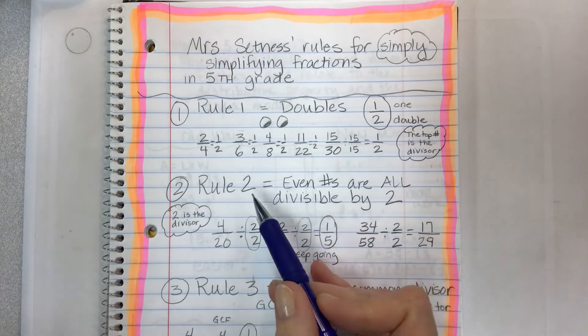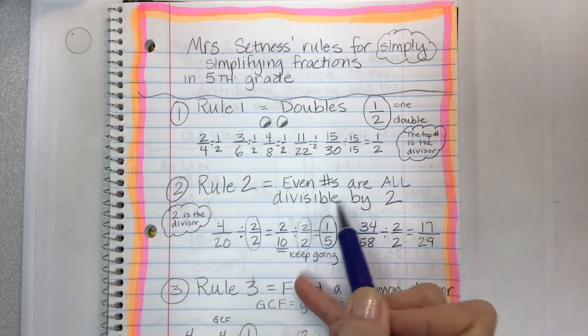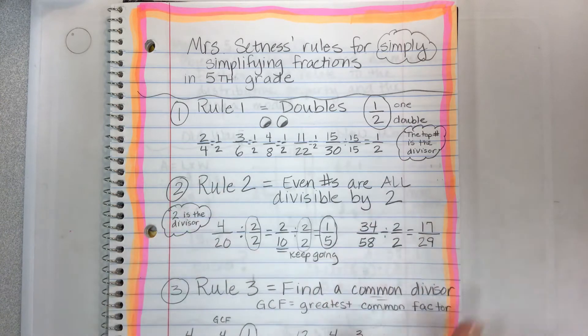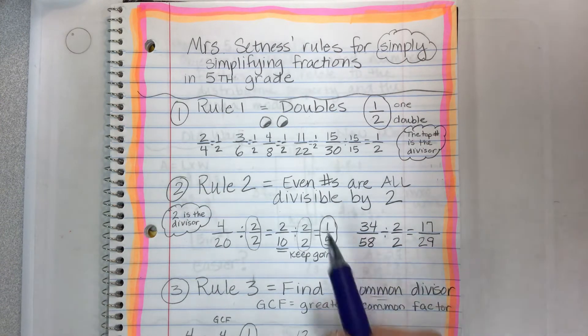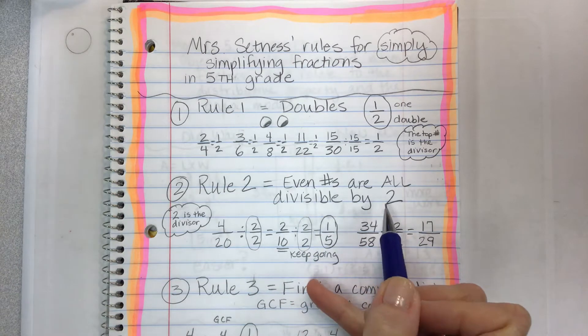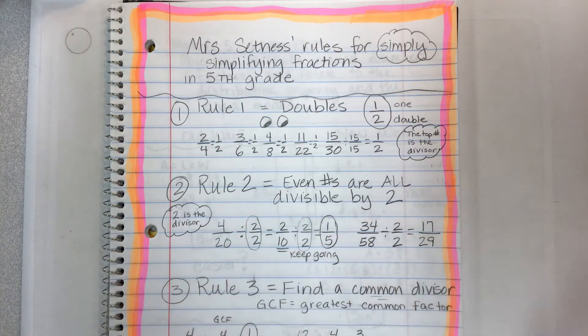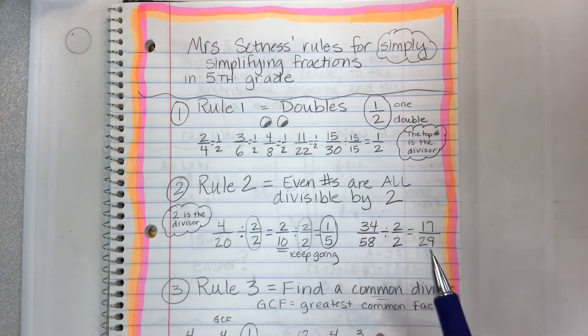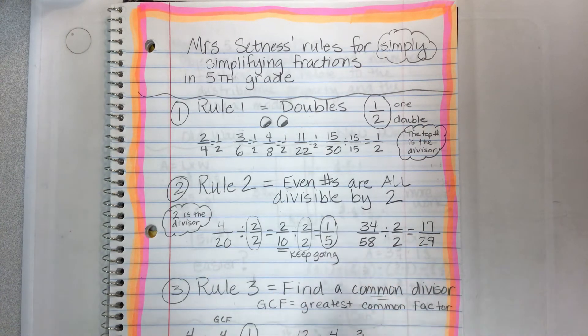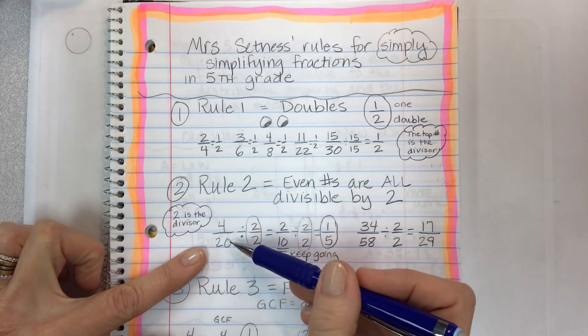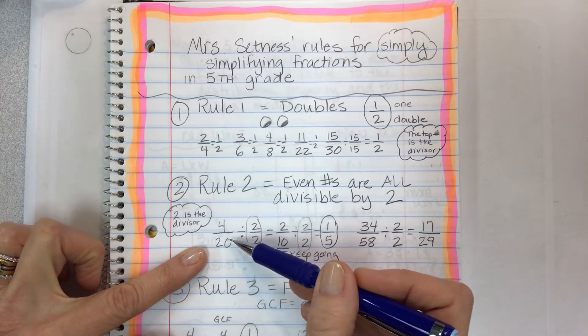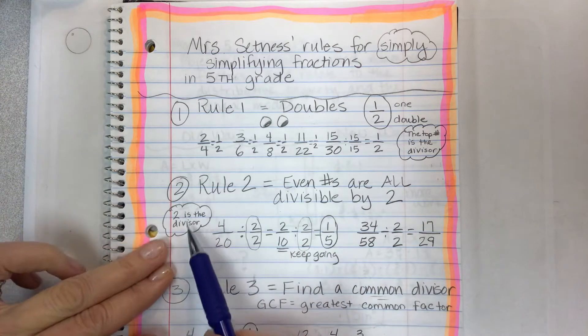Rule two, even numbers are all divisible by two. Let's say you don't know your math facts, you're learning them but you're still not there. Remember that two evenly can be counted and go into all the numbers that end with zero, two, four, six, or eight. Any number that is even can be divided by two. So two is the divisor.